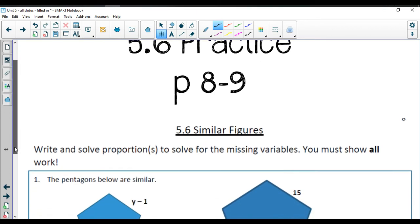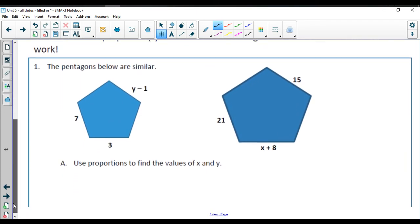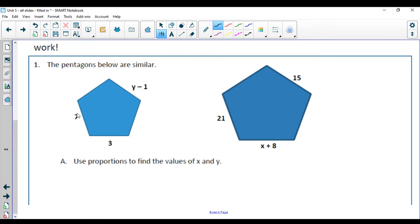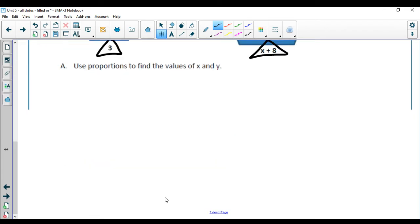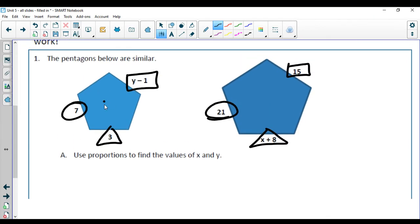This is the practice packet, pages 8 and 9 for lesson 5.6. We're going to set up some proportions here. I'm going to circle and box and triangle these up. I'll make this left one my top and the right one my bottom, so I need to start with the ones that both have numbers.